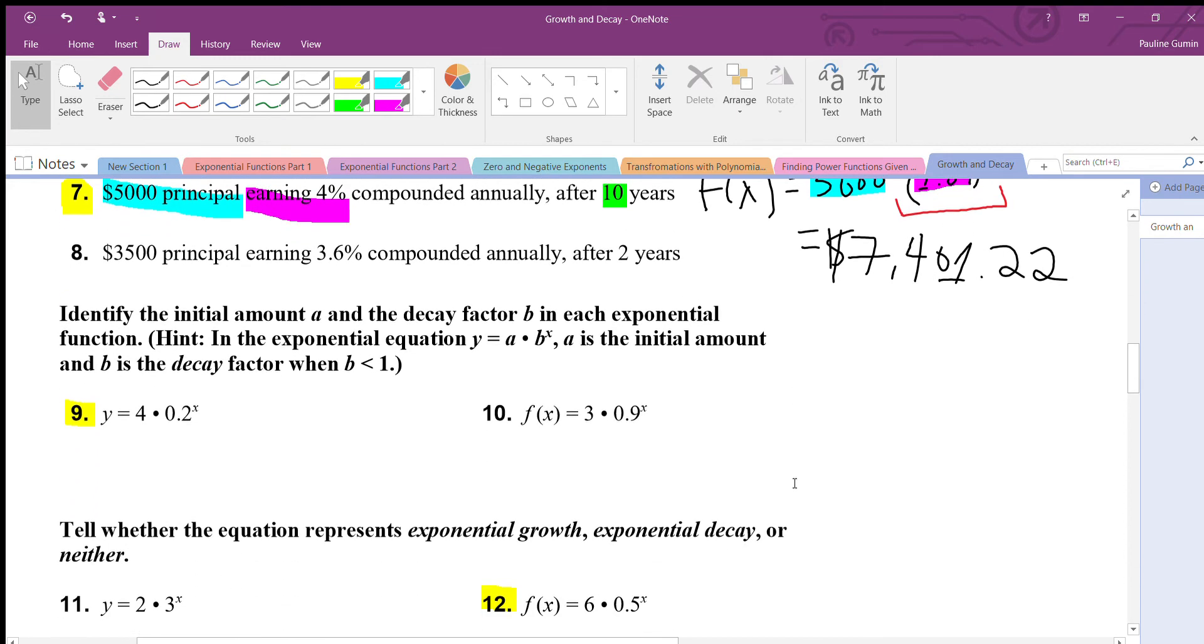Identify the initial amount and decay factor. Decay now. Number nine, this is our initial amount, we start off with four, and our decay factor is 0.2.